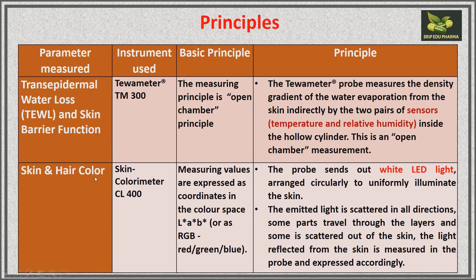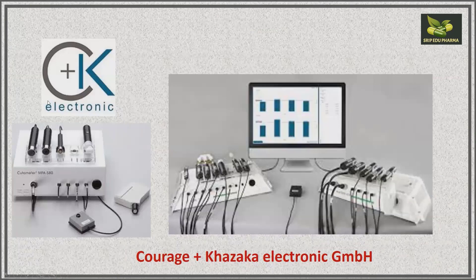Skin and hair color is determined by the skin colorimeter. Values are expressed as coordinates in the color space LAB, also referred to as RGB (red, green, blue). The probe sends out white LED light arranged circularly to uniformly illuminate the skin. The emitted light is scattered in all directions — some parts travel through the skin layers and some is scattered out. The light reflected from the skin is measured in the probe and expressed accordingly.